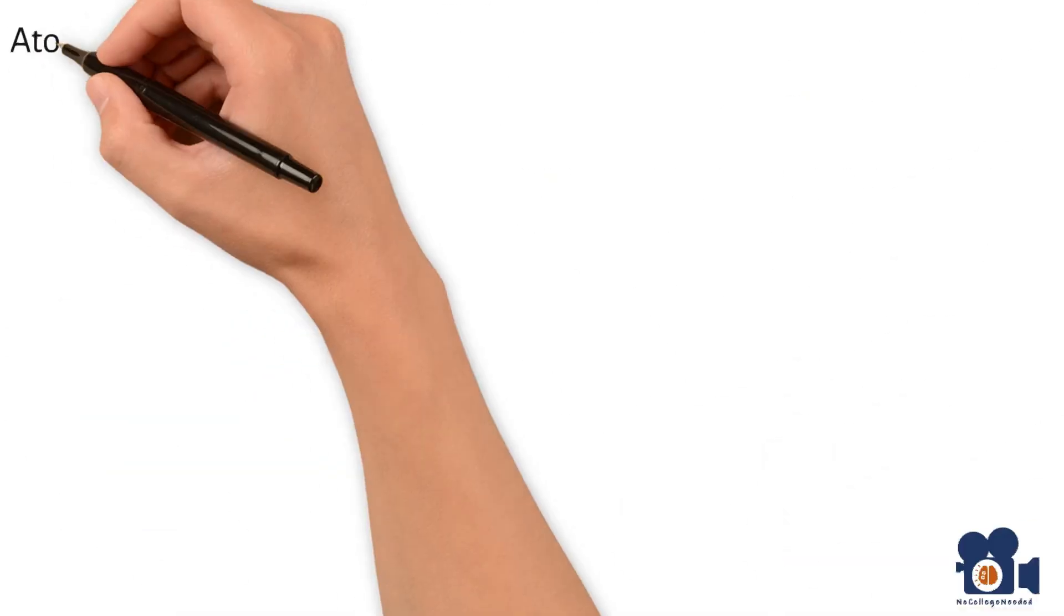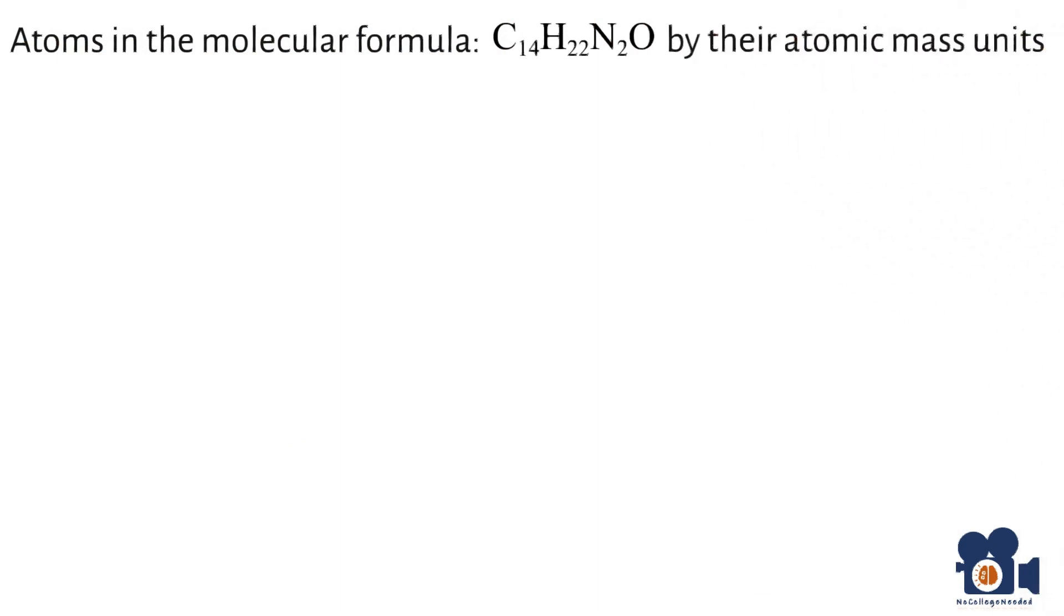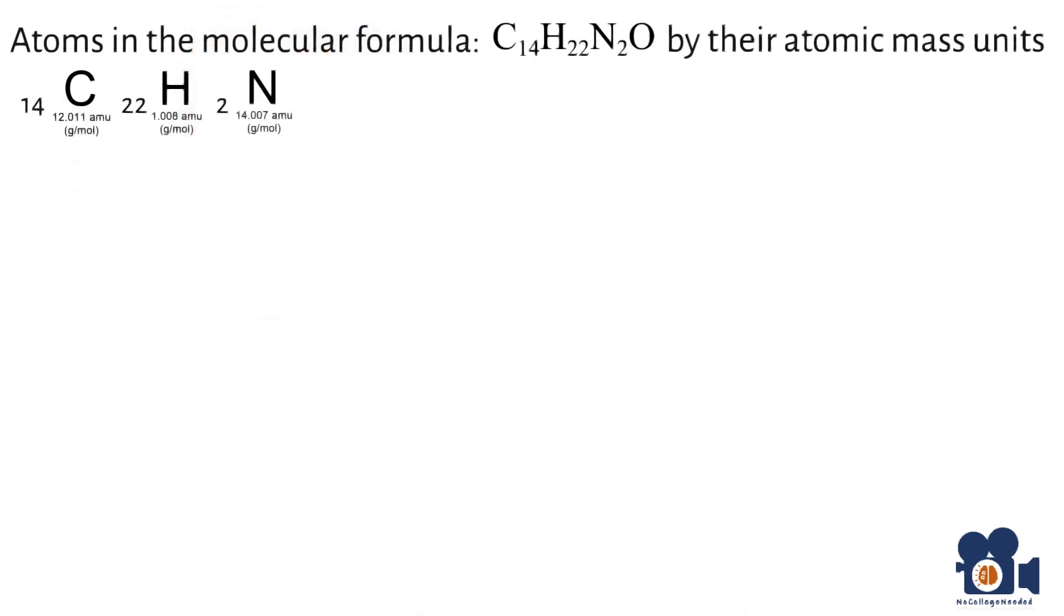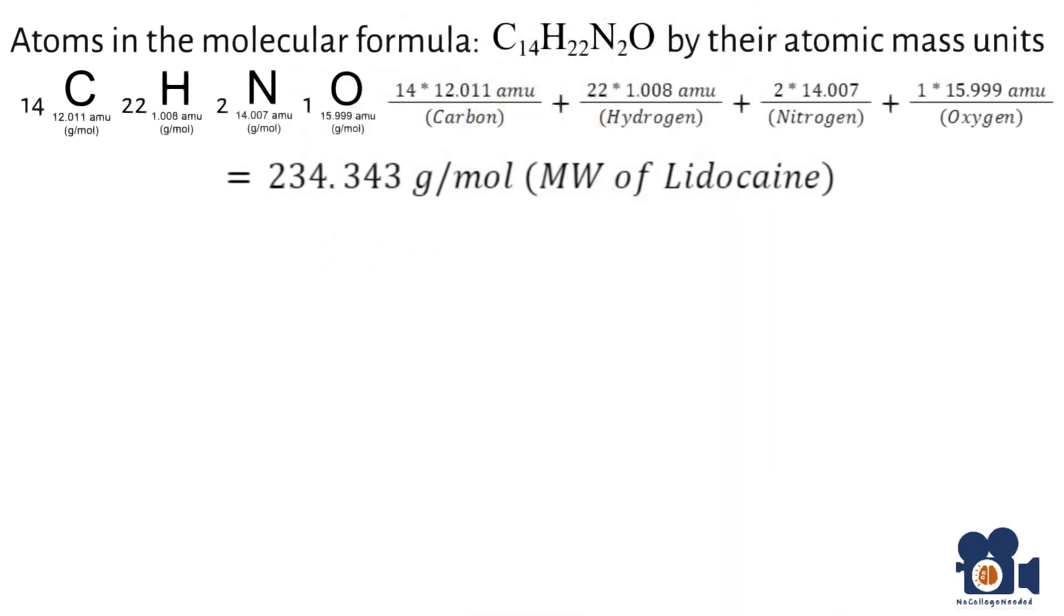To do this, you multiply the atoms in the molecular formula by their atomic mass, like we learned previously. There are 14 carbons, which is 14 times 12.011 AMU, plus 22 hydrogens, which is 22 times 1.008 AMU, plus 2 nitrogens, which is 14.007 times 2, plus 1 oxygen, which is 15.999 AMUs. That's coming out to 234.343 grams per mole, which is the molecular weight of lidocaine.